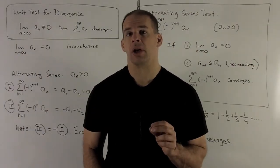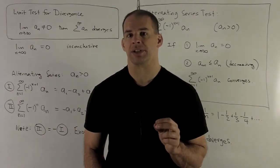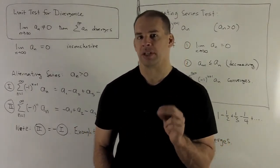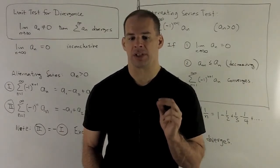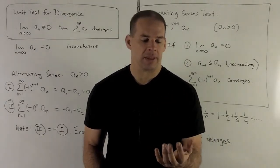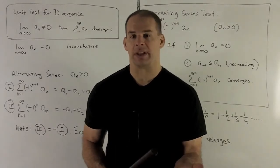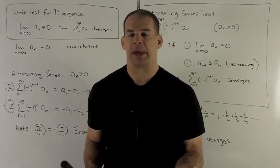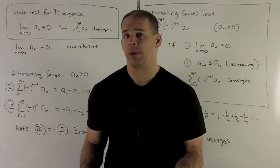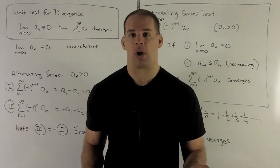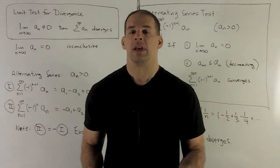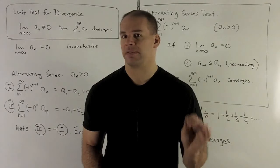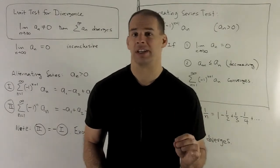Our next series test for convergence only applies to a certain type of series, alternating series. To motivate this a little bit, let's consider the limit test for divergence. Somebody hands me a series, the first thing I should do is check with the limit test. If the limit of the sequence a_n that our series is based on does not go to zero, the series automatically diverges. If the limit of a_n equals zero, the answer is not convergence, the answer is just you need to do more work.